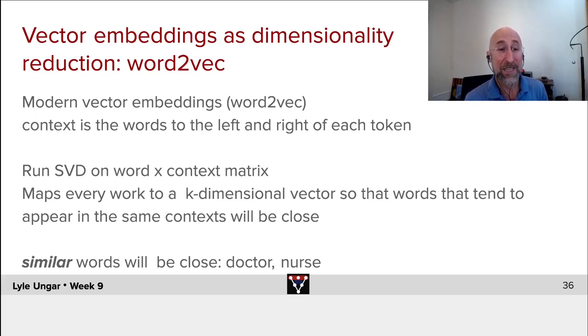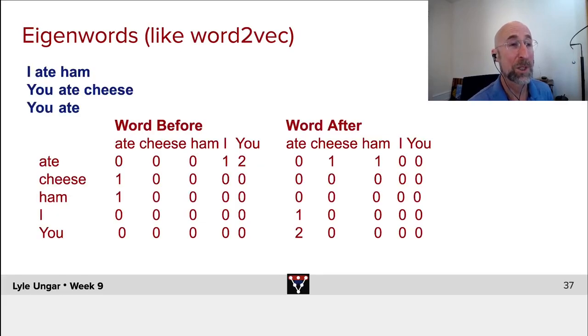With LSA it was related words—doctor, nurse, hospital, cancer. With word2vec it's similar words—doctor, nurse. What do I mean by similar? If you look at 'I ate ham' and 'you ate cheese,' ham and cheese are distributionally similar—they show up in the same immediate context. 'I' and 'you' are very distributionally similar, showing up in the same sorts of contexts before the same sorts of words.